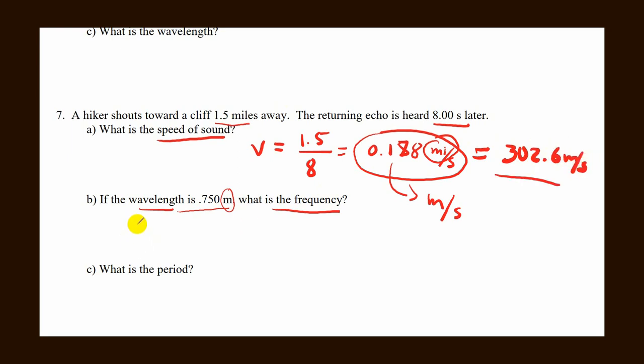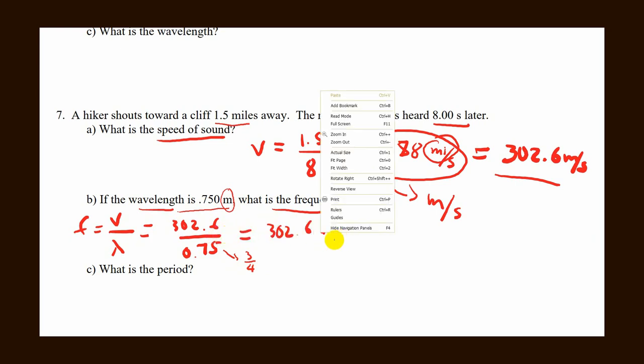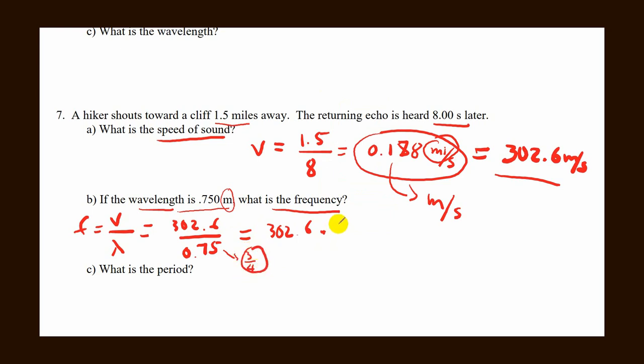Frequency equals velocity divided by wavelength. Velocity is what we just converted, 302.6. The wavelength is 0.75, which is 3 fourths. When we divide, we can set it up as multiplication. Multiply by the reciprocal of 3 fourths, which is 4 over 3, which will give you hertz.